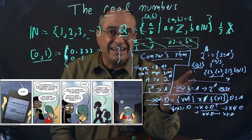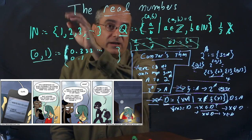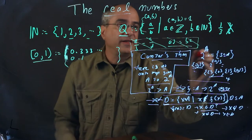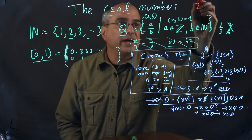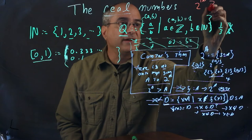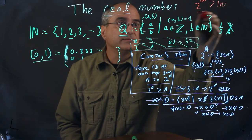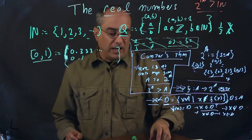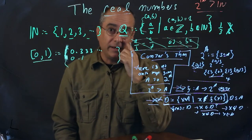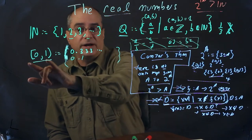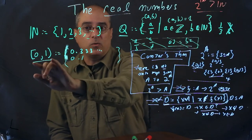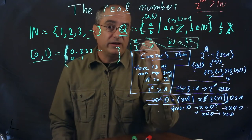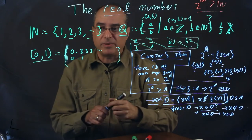And this works for any set, including the natural numbers. So we know as a side effect that 2 to the N is a bigger set than N, a much bigger set. Now how are we going to exploit that? Our plan is we're going to map [0, 1] onto 2 to the N, showing that [0, 1] is at least as big as 2 to the N, and that will basically nearly complete our proof. So let's do that part.